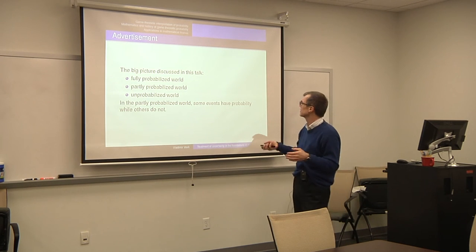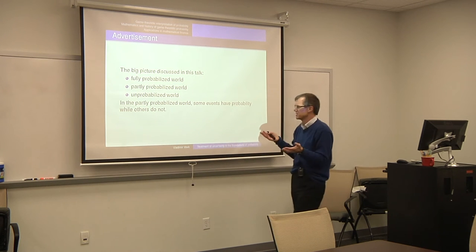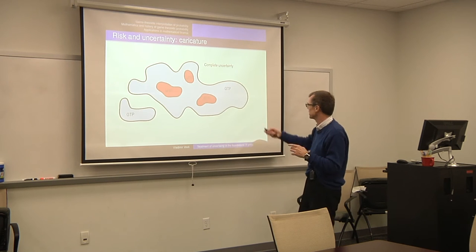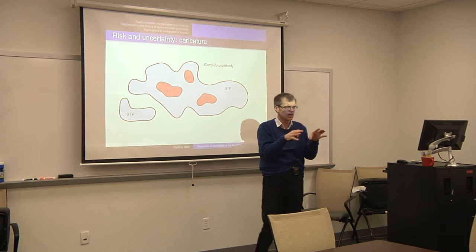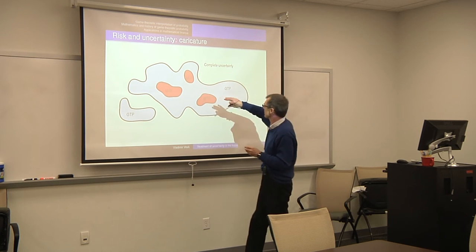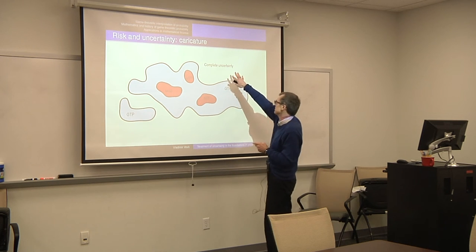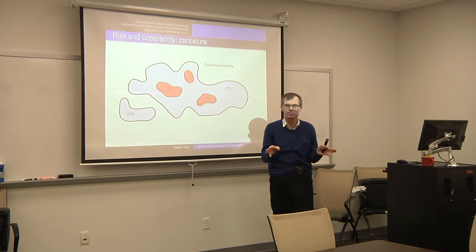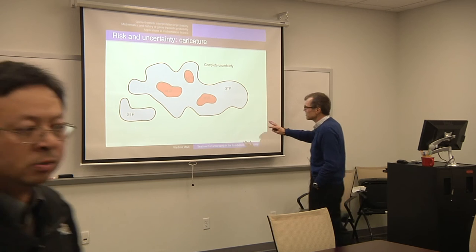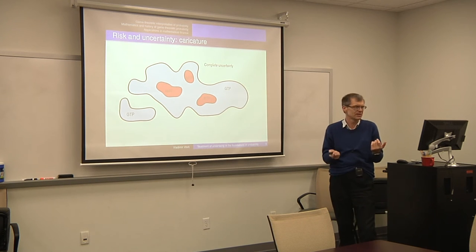I'll start from some big pictures. We can see the world as modelled by science and roughly divide it into different parts. Some small parts are fully probabilised — we can attach probability to any event in those small parts. But there are also parts where we have complete uncertainty, where we can't say anything. If it's completely probabilised, measure theoretic probability is perfect. But there is also a grey area between these two parts, and I think this is where game theoretic probability is useful — maybe essential even.